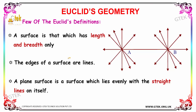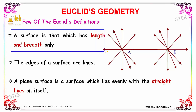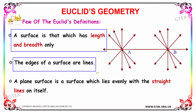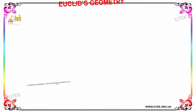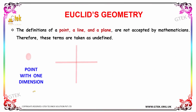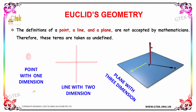A surface is that which has length and breadth only. Euclid also emphasized the edges of the surface, which are considered as lines. He also defined a plane surface: a plane surface is a surface which lies evenly with a straight line on itself. These are some of the considerations from Euclid's definitions and the logistics he proposed.